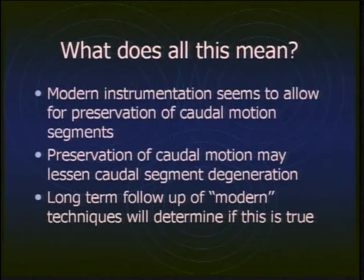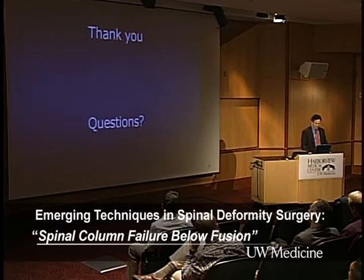So what does it all mean? Modern instrumentation really seems to allow us to preserve more caudal motion segments than we were able to do with hook-rod constructs, and it is certainly equivalent to anterior techniques. Preservation of caudal motion may lessen the incidence of caudal segment degeneration. However, with improved three-dimensional sagittal and coronal correction from pedicle screws, it remains unclear whether — 20 years from now, as we look back at these modern techniques — we'll be saying the same things we now say about Harrington rods. At least from a logical standpoint, it seems we're doing a better job.